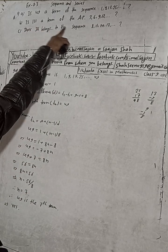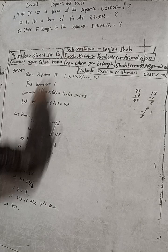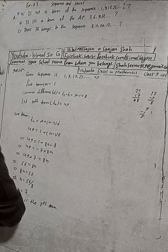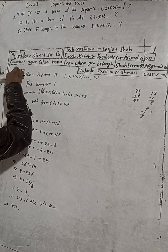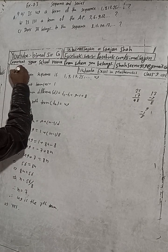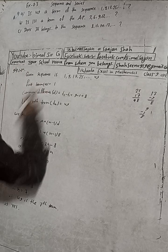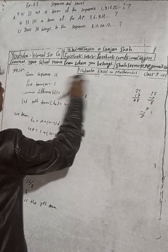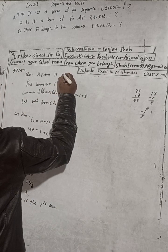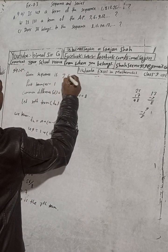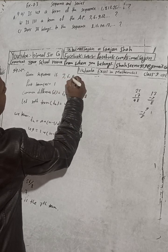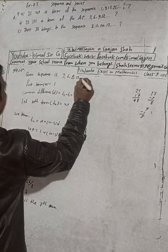Now part B: is 111 a term of the AP? The given sequence is 3, 6, 9, 12, dot dot dot.